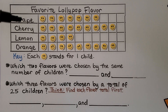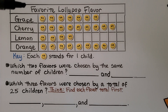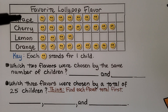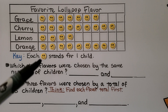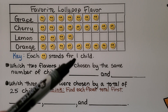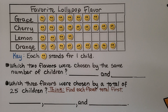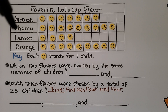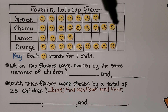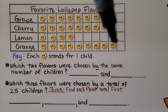This picture graph says 'Favorite Lollipop Flavor' for the title. It has grape, cherry, lemon, and orange, and the key tells us that each smiley face stands for one child. The first question is: which two flavors were chosen by the same number of children? We can look at the graph to see which have the same amount — cherry and orange have the same amount.